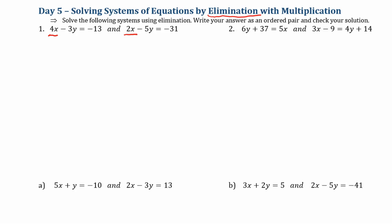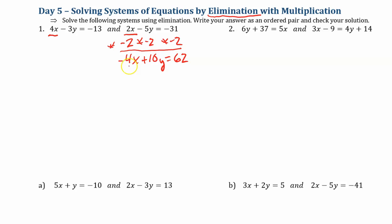So I'm going to look at the x terms here. I know that 2x, if I multiply that by negative 2, I'll get negative 4x. But I can't do it to just one term — I'm going to have to multiply every term, the entire equation, times negative 2. So negative 5y times negative 2 is plus 10y. Negative 31 times negative 2 is positive 62. Now I have that opposite coefficient, so I'm going to write it immediately underneath my new multiplied equation and add the two equations together.